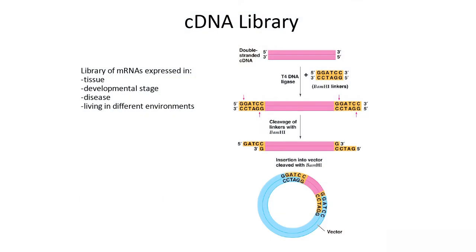That's a genomic library because the starting material was a genome that we randomly fragmented through a partial digest. But you can make a library of anything. Whatever pieces of DNA or RNA you start with, you just take all those pieces, clone them all into separate vectors, grow them in colonies of bacteria, and you've generated a library.